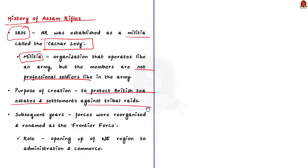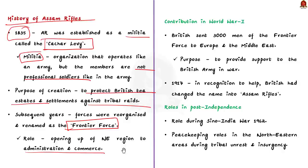Subsequently, all the unorganized forces were reorganized and named as the Frontier Force. This force significantly contributed in opening the Northeast region to administration and commerce. During World War I, the British sent over 3,000 men of the Frontier Force to Europe and the Middle East to support the British Army. The men of the Frontier Force showed great valor in the war. So in 1917, to recognize their work during the Great War, the British changed the name of the Frontier Force to Assam Rifles. This is how the Assam Rifles came into being.